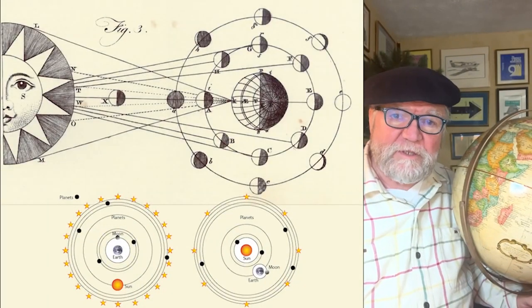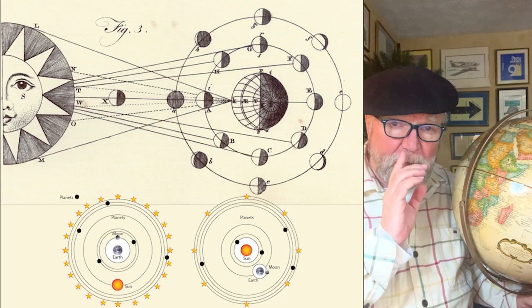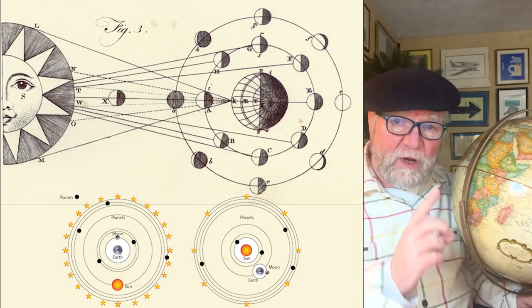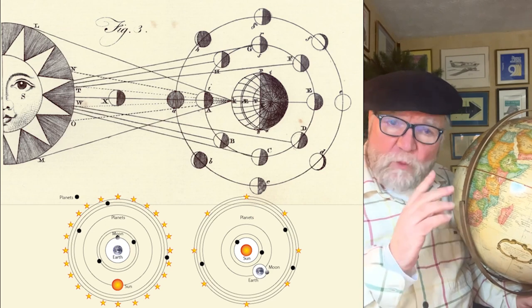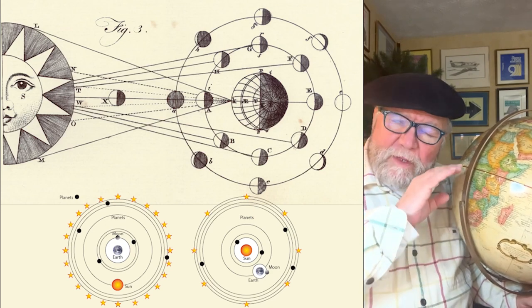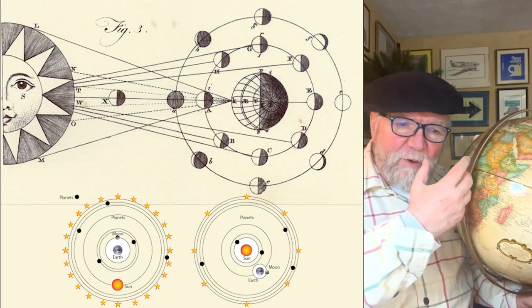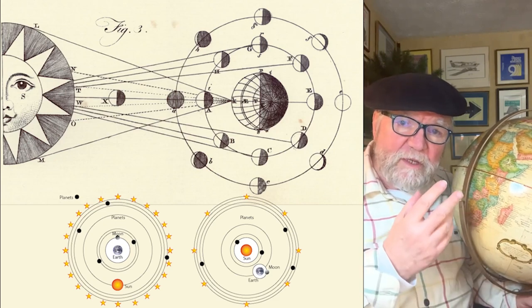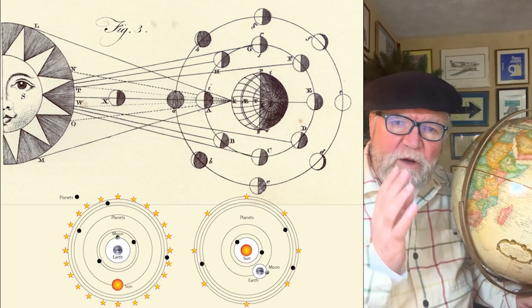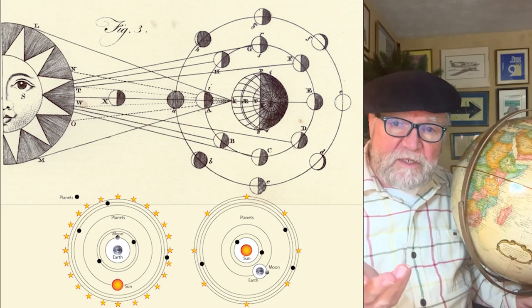Hi everybody, I'm Bill Sanders and this is Watch Art Sci, the Art and Science of Watch Collection. Today I want to talk about the equation of time. There are certain watches that keep the equation of time, and in order to understand it, it's important to understand that the whole concept of time was originally brought about by what's called solar time — this is where the sun is, what you see on a sundial.